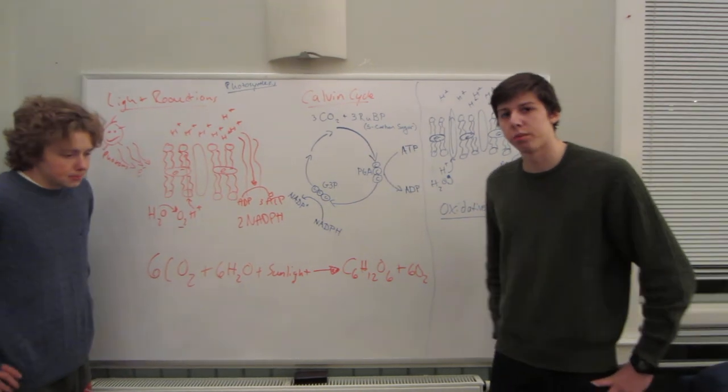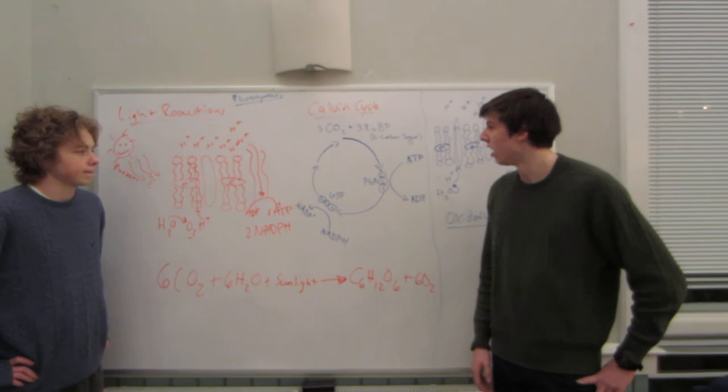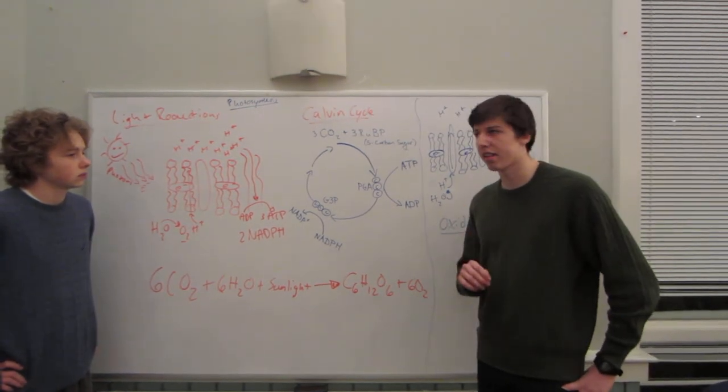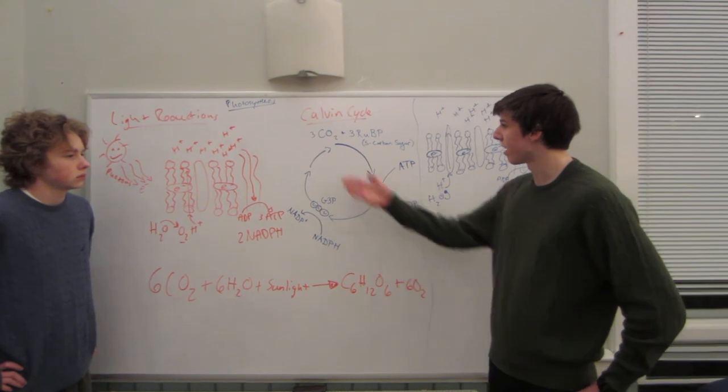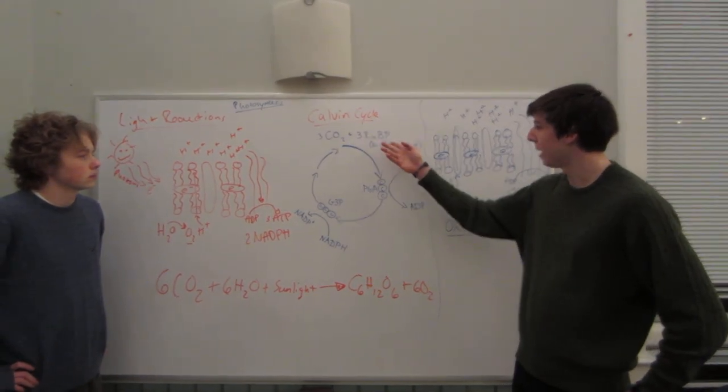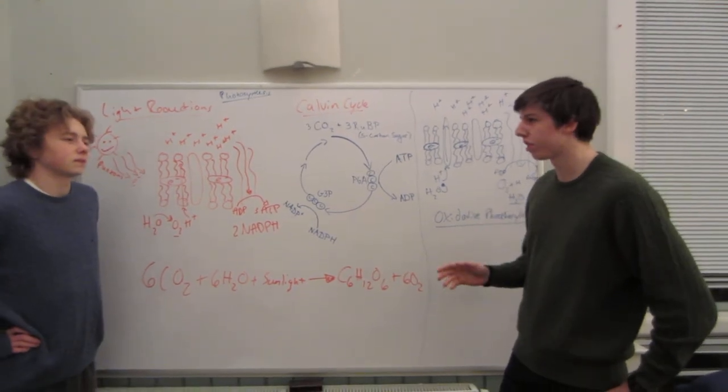So the next step is the Calvin cycle, which is a light independent reaction that takes place in the stroma of the plant. The first step of the Calvin cycle is carbon fixation. And what that is, is when three carbon dioxide bonds to three RUBP, which is a five carbon sugar. This forms a six carbon sugar,